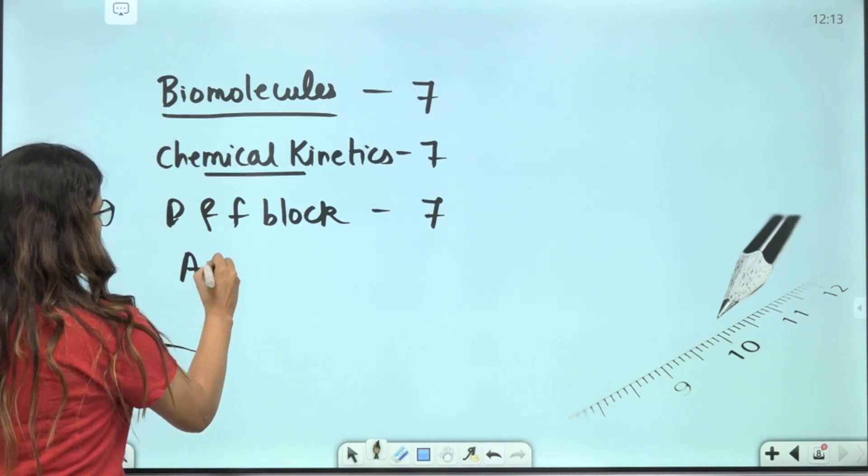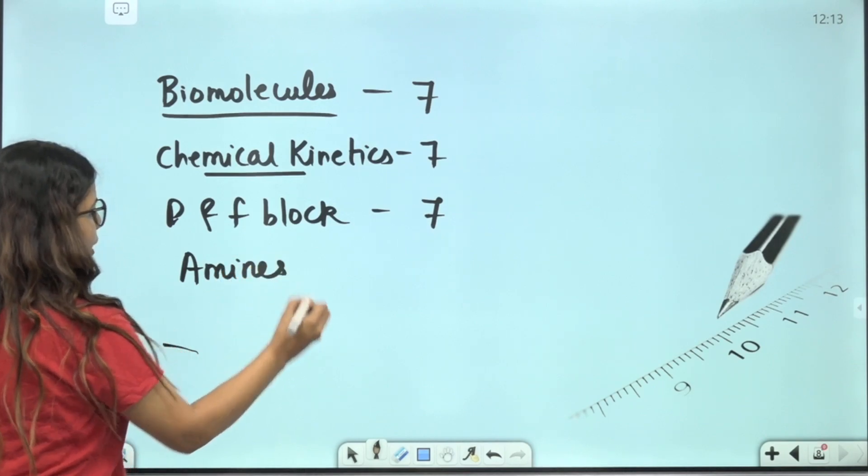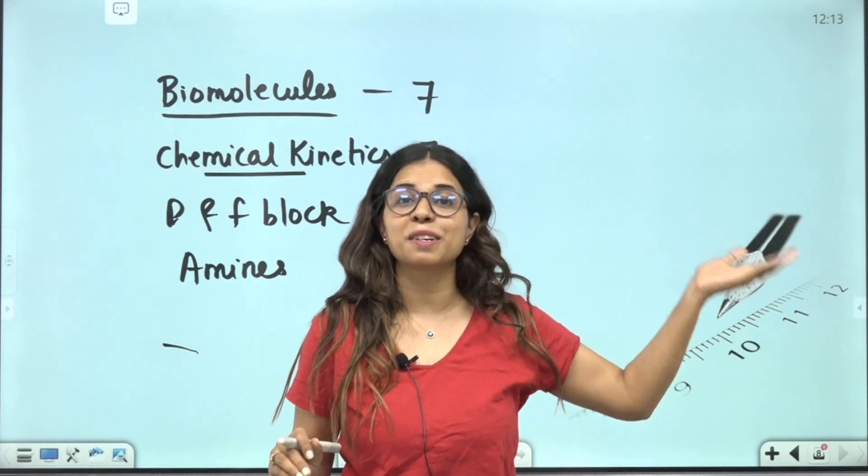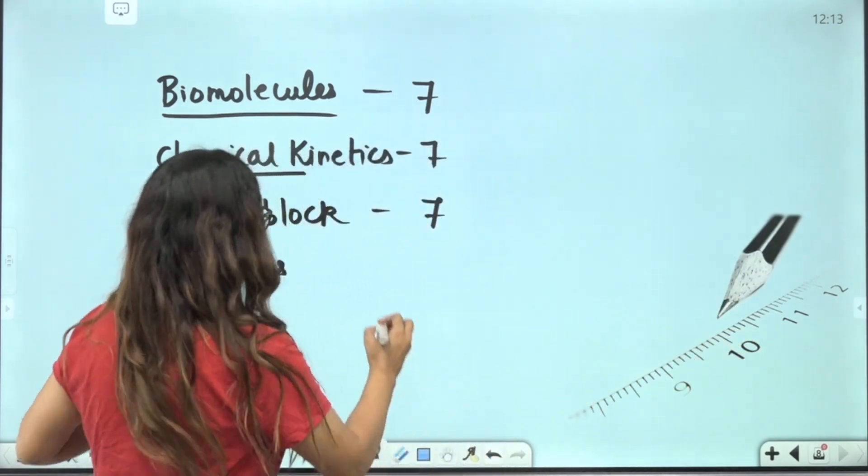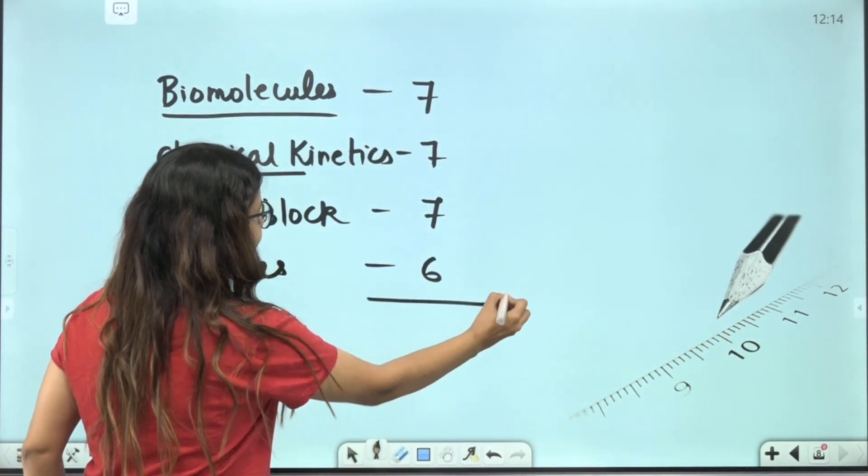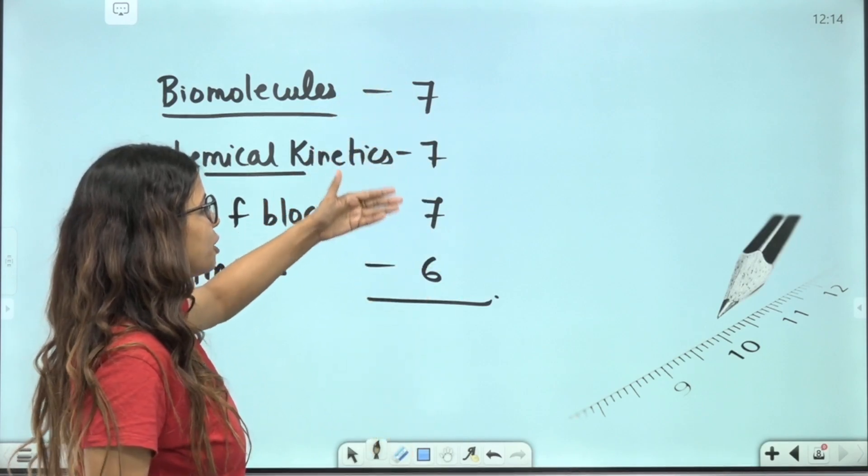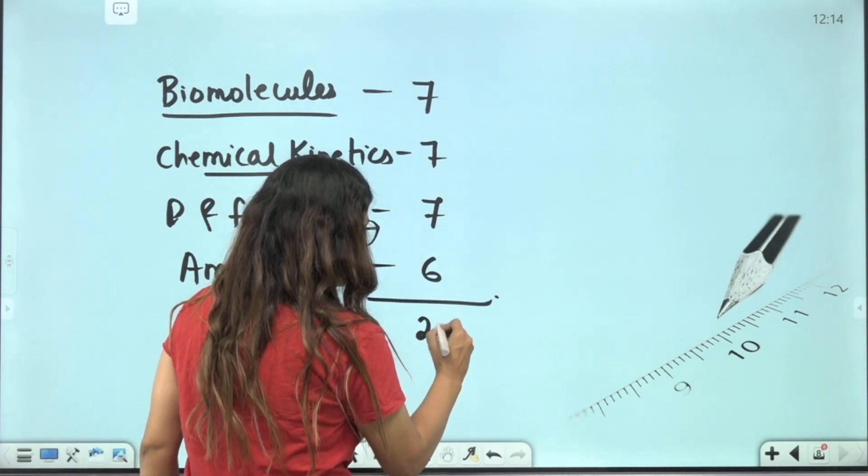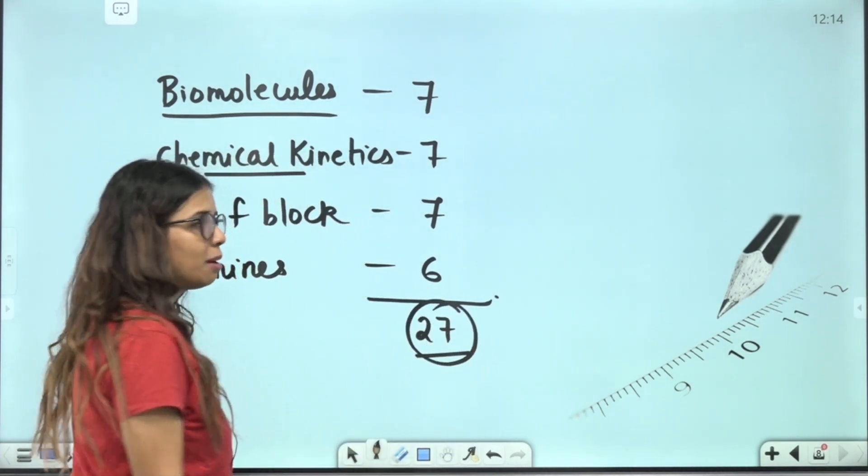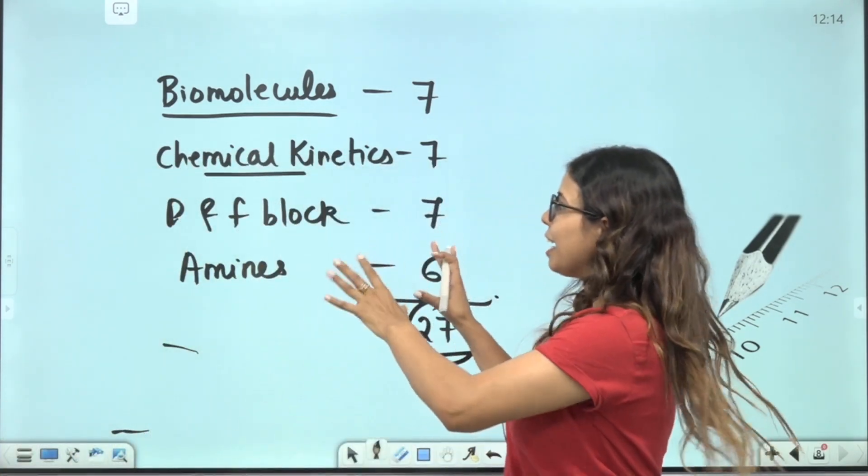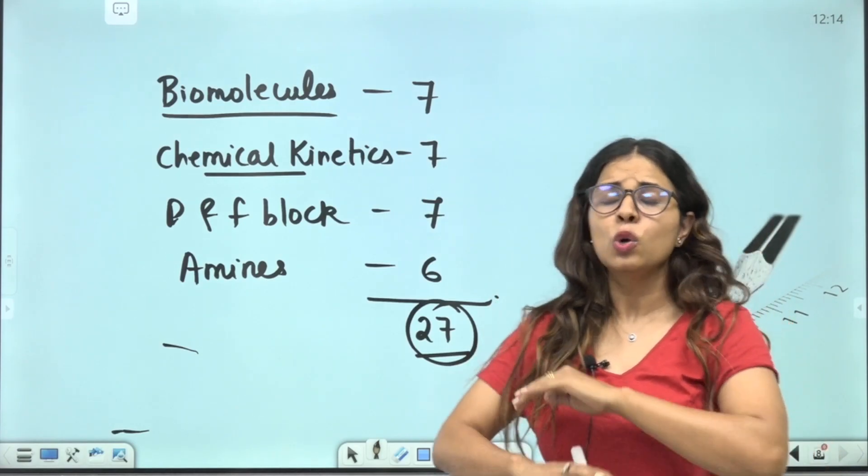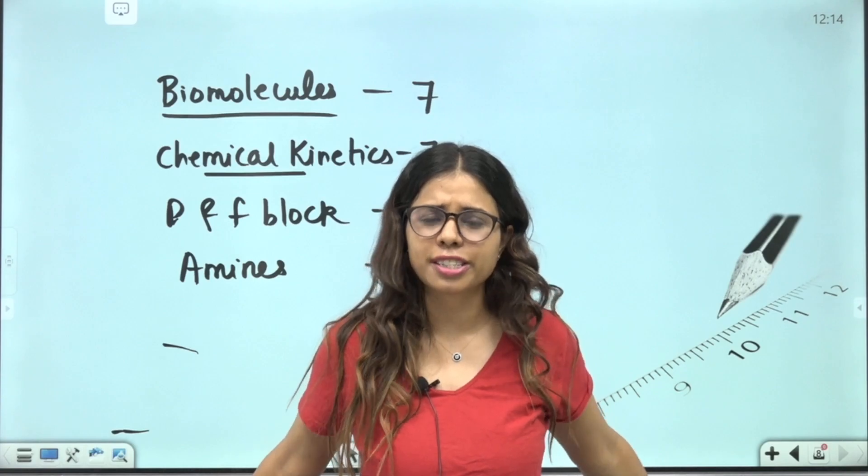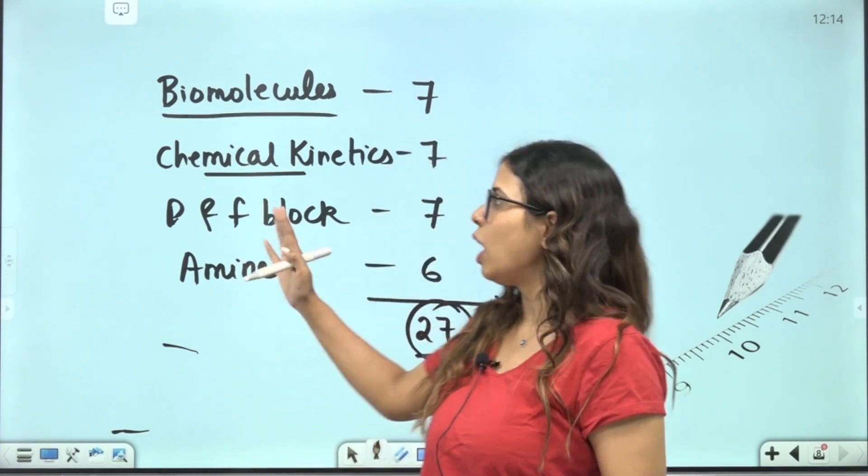Then you have D and F block element. You have 7 marks there. So these three chapters are very important. And after that, when you have covered these, the Amines chapter is very easy and very small as compared to the rest of the three chapters. And this gives you 6 marks. How much is it? 7, 2 times 14, 7, 3 times 21, 7, 4 times 28. That means 27 marks is very easy. If you have only these 4 chapters done, even if you have not studied anything else in chemistry, only these 4 chapters done very well, then no one can stop you from passing the exam.